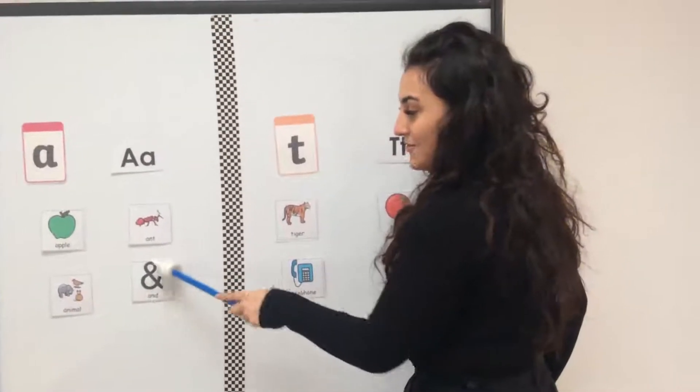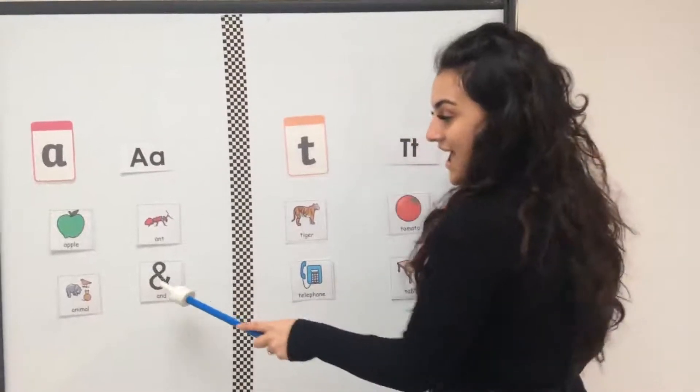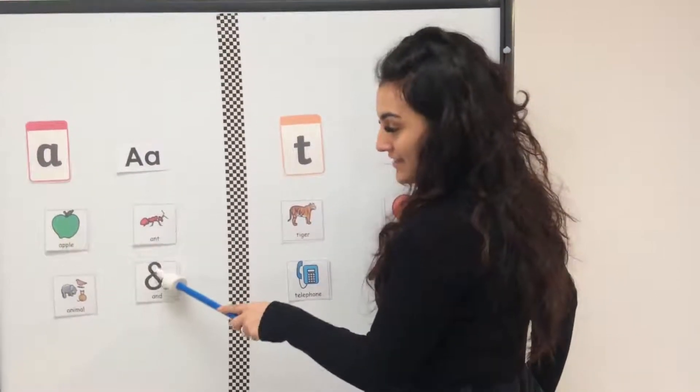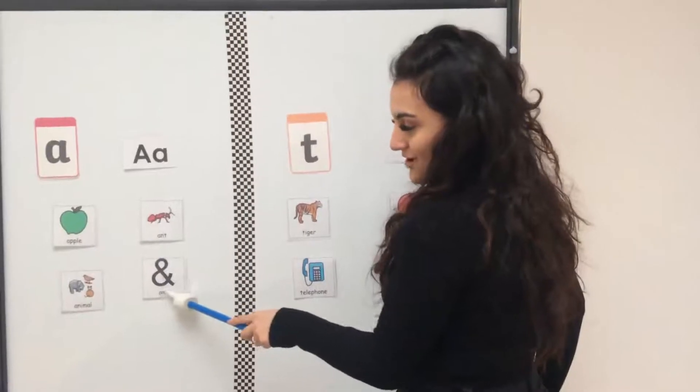And over here we've got and. I've got the picture and the word for and. And also begins with the letter A.